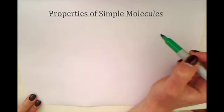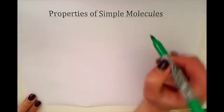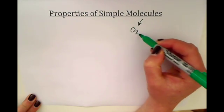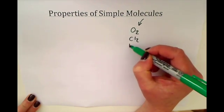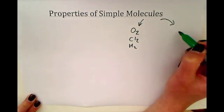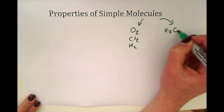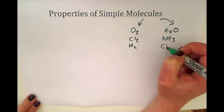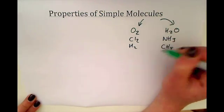Molecules are groups of atoms which are held together by covalent bonds. It could be an element, for example O2, Cl2, or H2, because they have the same type of atom. Or it could be a compound — two different elements chemically bonded together — for example water, ammonia, or methane. These are some examples of simple molecules.